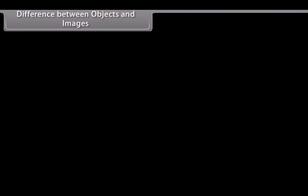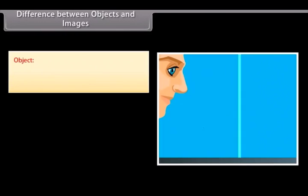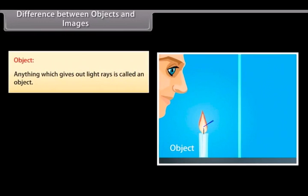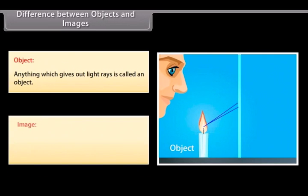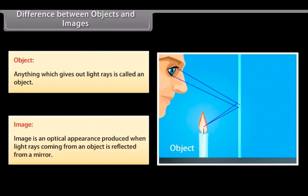Difference between objects and images. Object: anything which gives out light rays is called an object. Images: image is an optical appearance produced when light rays coming from an object are reflected from a mirror.